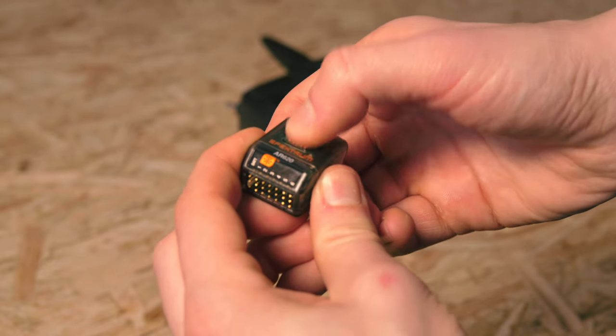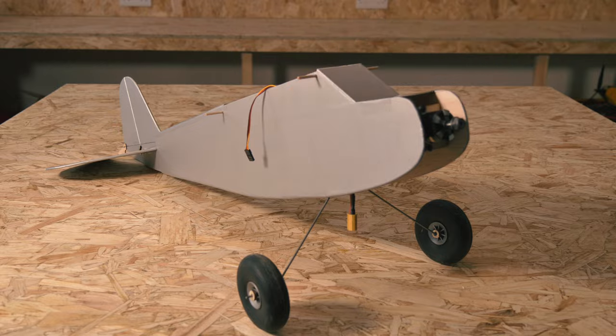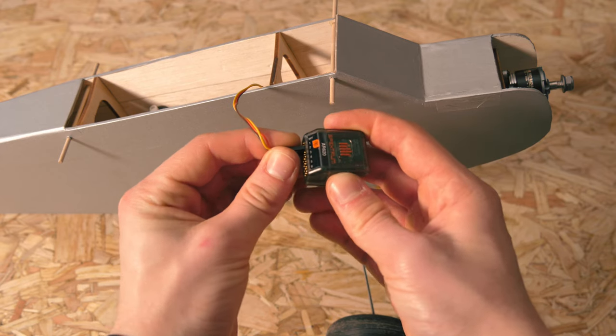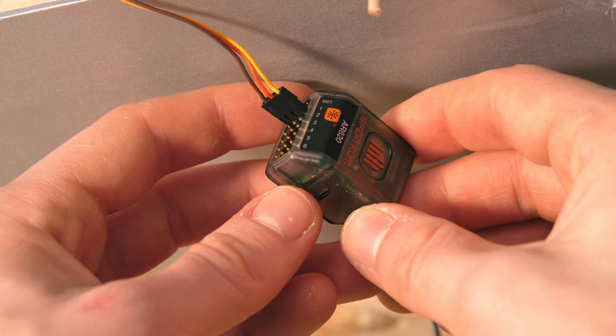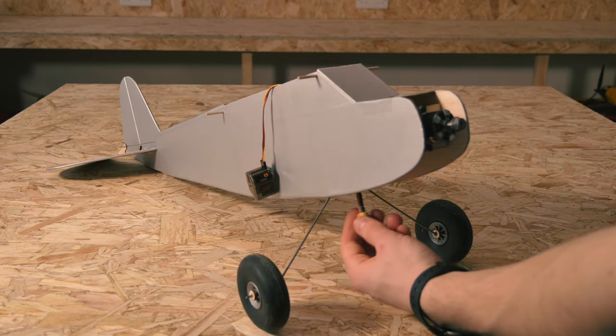Instead, you can click this button. Insert your ESC cable into channel 1 on the receiver. Make sure to get the yellow signal wire next to the text for the right orientation.